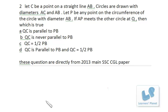Now see this geometry question from SSC CGL 2013 paper. Let C be a point on a straight line AB. Circles are drawn with diameters AC and AB. Let P be any point on the circumference of the circle with diameter AB. If AP meets the other circle at Q, then which is true?